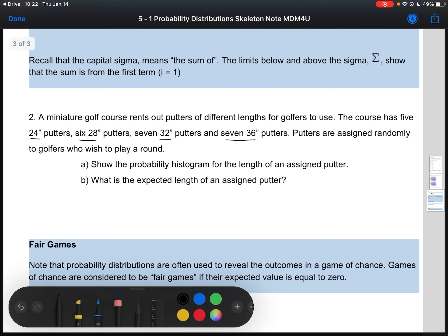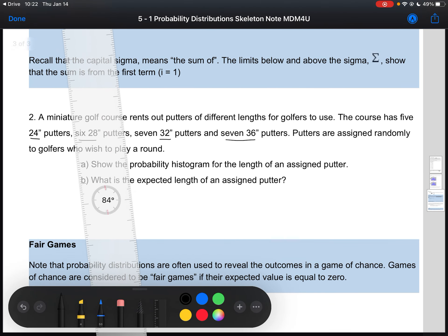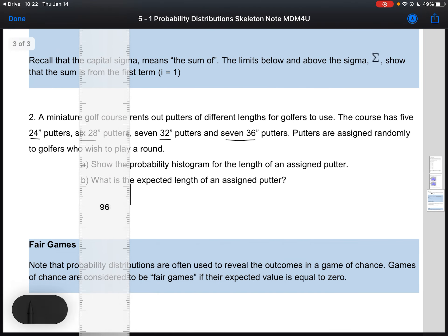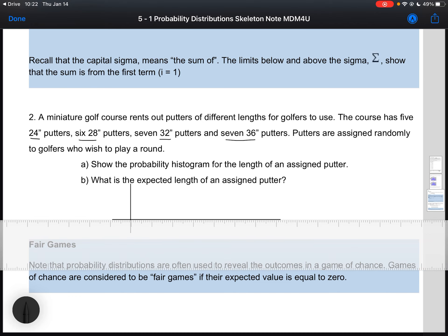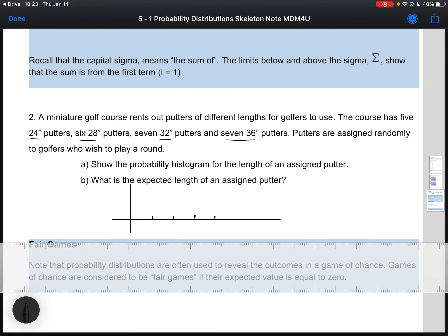The first thing we're going to do is create a probability histogram. You should use a ruler; if you have graph paper, that's even better. So my probability histogram: I'm going to put my labels on here. My first bar is going to be my 24-inch putters, my second bar is going to be my 28-inch putters, then my 32-inch putters, and then my 36-inch.